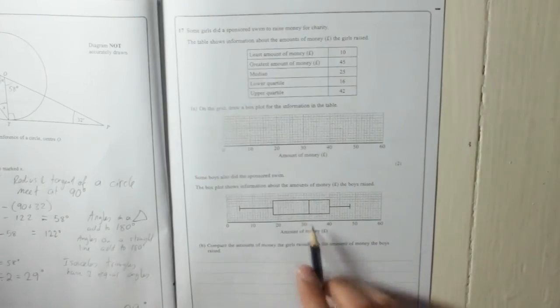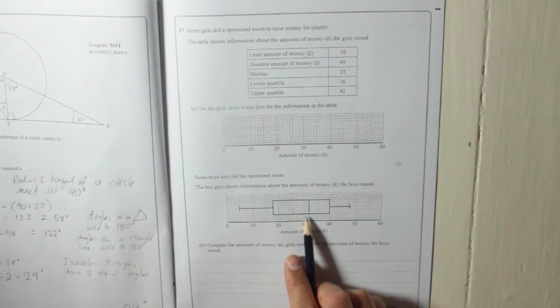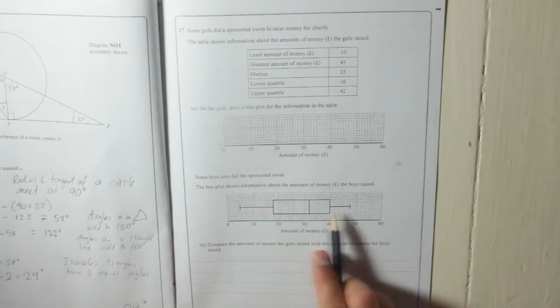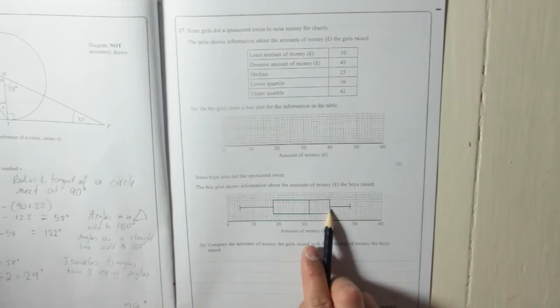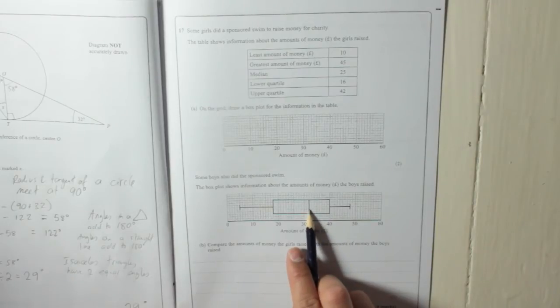Right, box plot. Well, box plot, there's one there. That's what it is. That's the lowest, that's the highest. Lower quartile, upper quartile and the median.